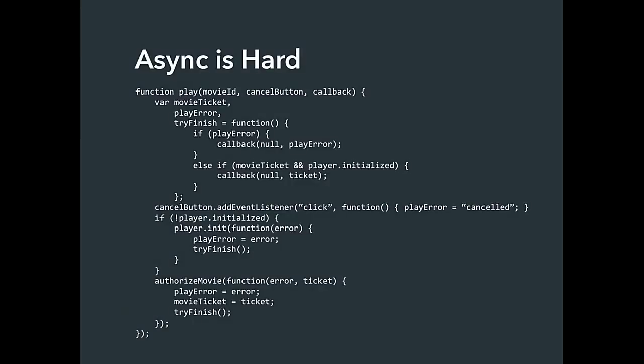This is the type of code we saw a lot of in Netflix about three years ago. This piece of code is trying to play a movie. You've got to authorize that movie being played — get a license to decrypt it. You have to intercept if the user hits a cancel button. And you need to make sure the player is loaded. At Netflix we have a native player component that loads asynchronously and we have to wait for it before we can play anything.